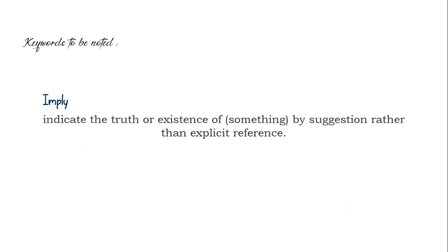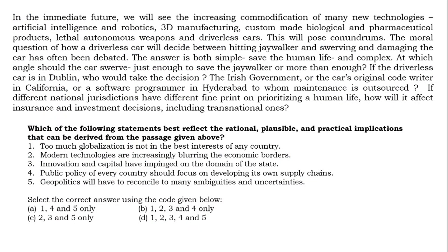Moving on to the third keyword: imply. What does it mean? Indicate the truth or existence of something by suggestion rather than explicit reference. Here the author says something by suggestion only — not directly. Passage: In the immediate future we will see the increasing commodification of many new technologies — artificial intelligence and robotics, 3D manufacturing, custom-made biological and pharmaceutical products, lethal autonomous weapons, and driverless cars. This will pose conundrums.